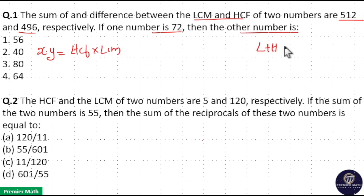LCM plus HCF equals 512, and LCM minus HCF equals 496. If you take the difference, 2HCF equals 512 minus 496, which is 16. 2 goes 8 times in 16.